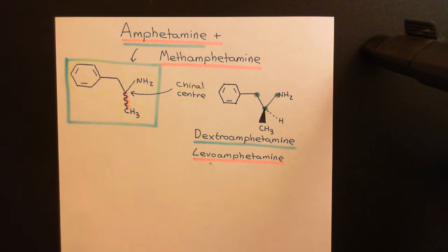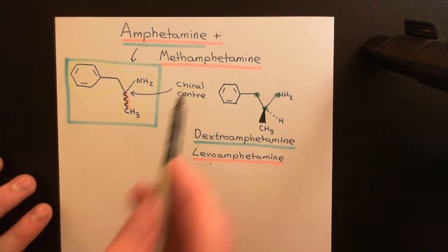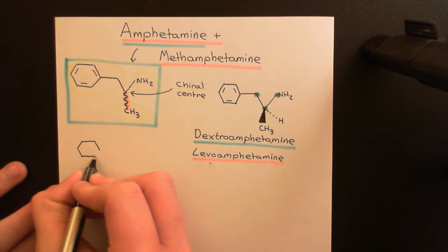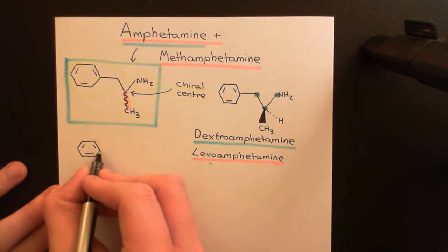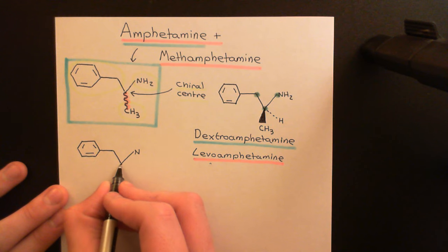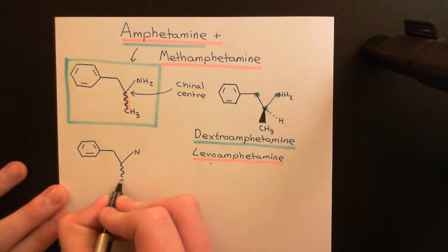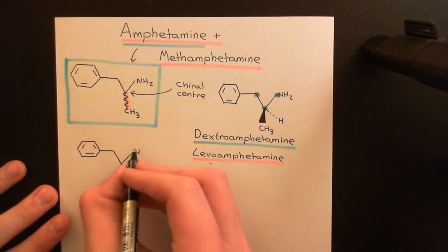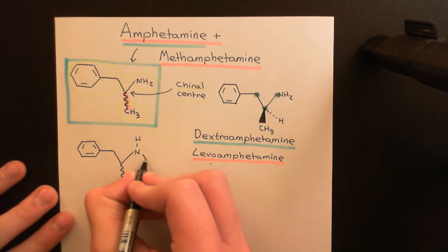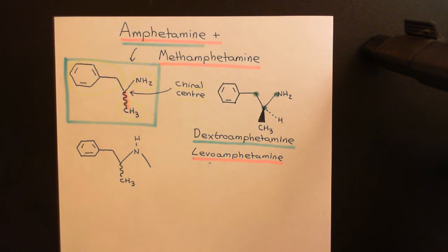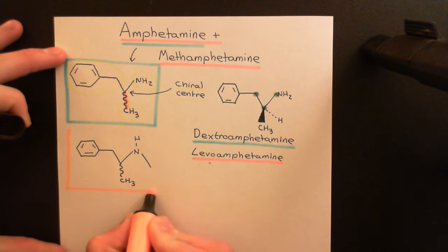Now let's have a look at methamphetamine. Methamphetamine is only a very small modification to the structure of amphetamine, but it has the same concept with two optical isomers. Starting again with a benzene ring, then a methylene group, then a carbon which will be the chiral centre, then an amino group — this carbon will again be a chiral centre with four different groups. The big difference between methamphetamine and amphetamine is that off the amino group there is now an additional methyl group coming off this nitrogen atom. So methamphetamine literally is just the amphetamine molecule with an additional methyl group on the amino group.